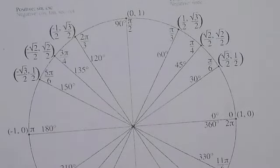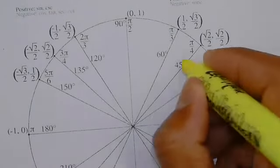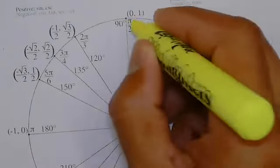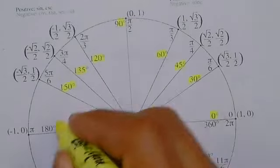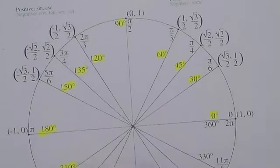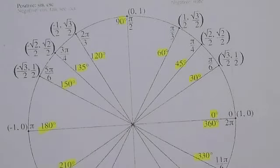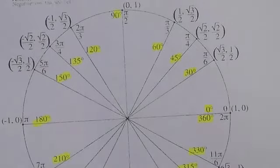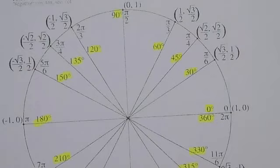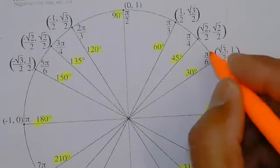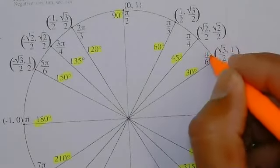You guys see the degrees here — all the way to 360. And the equivalent radian measures are right there.